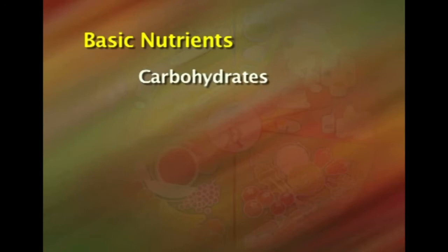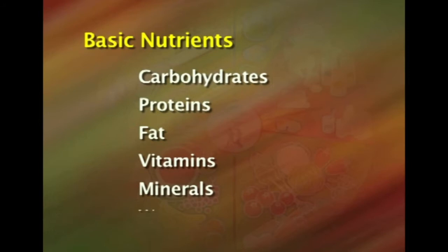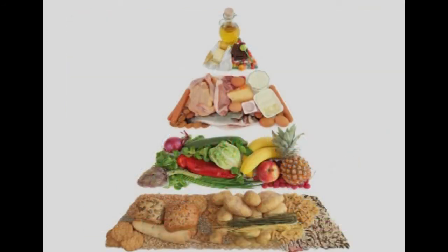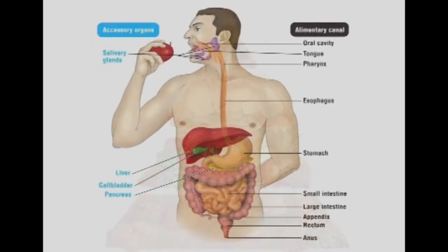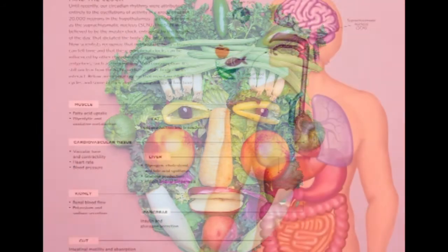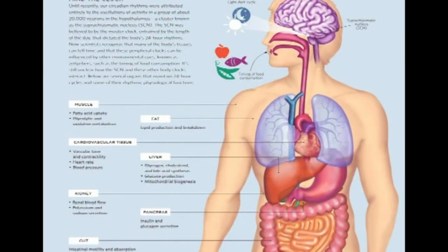There are six basic nutrients that we need to eat in our diet, which are namely carbohydrates, proteins, fat, vitamins, minerals, and water. Basically, nutrition is a science of food and the other substances therein, their action, interaction, their balance in relationship to health and disease, and the processes by which the organism ingests, absorbs, transports, and utilizes various nutrients and disposes of their end products.